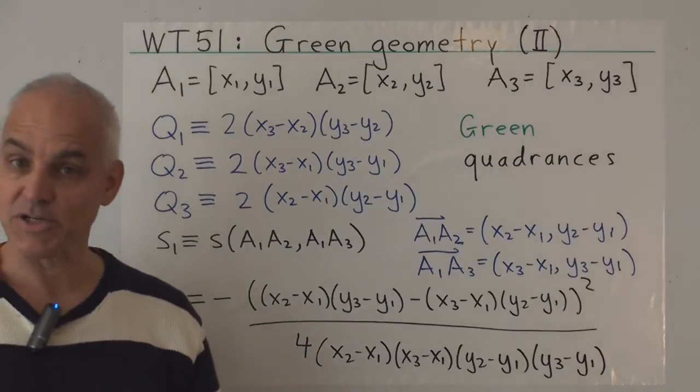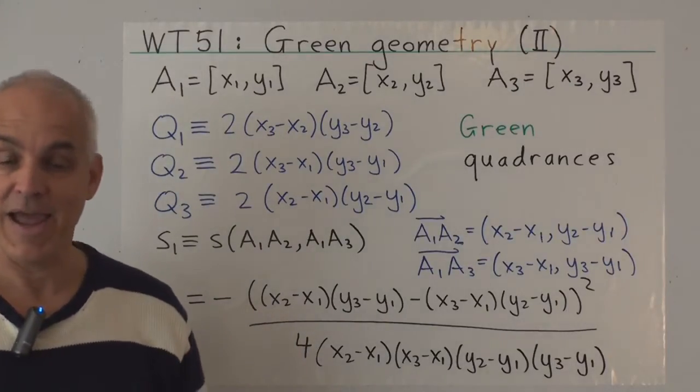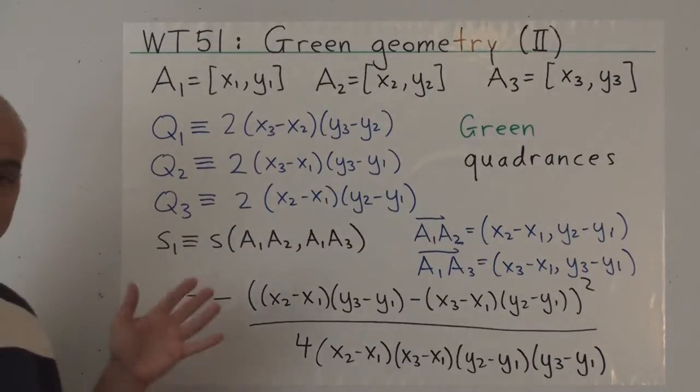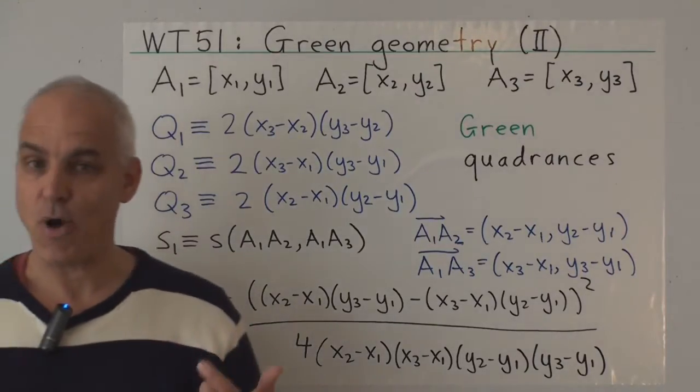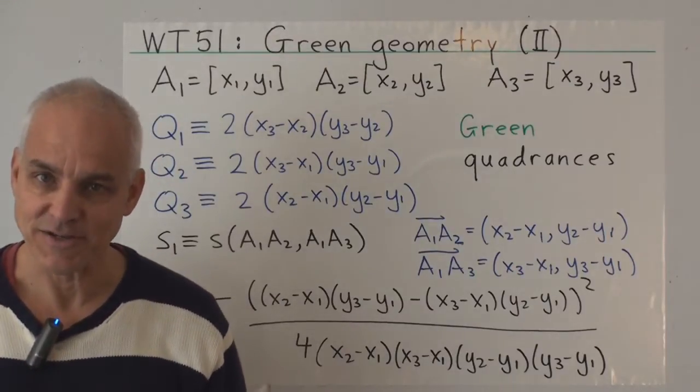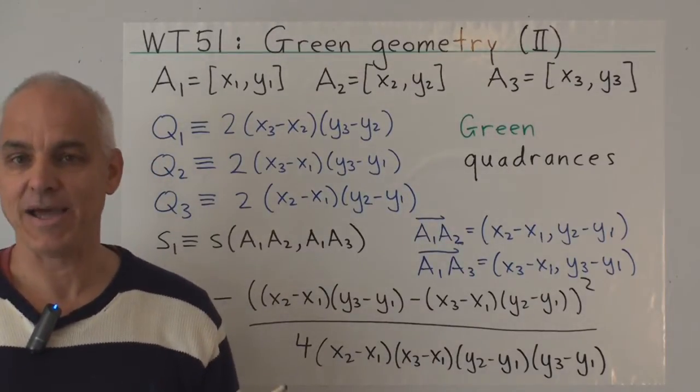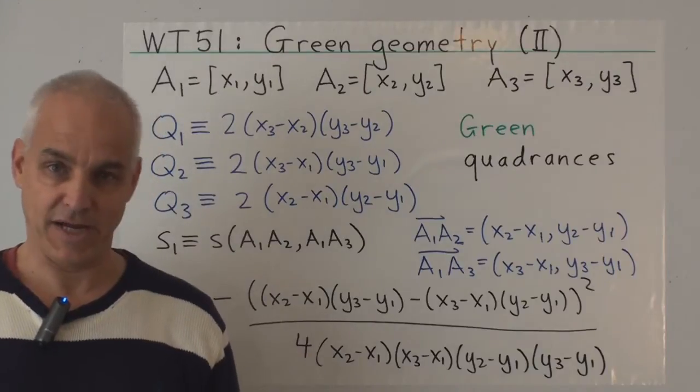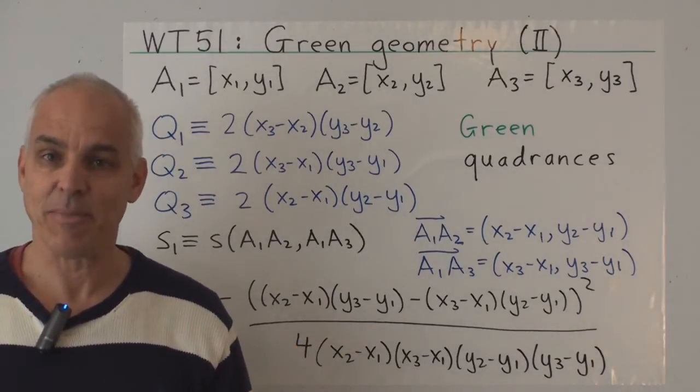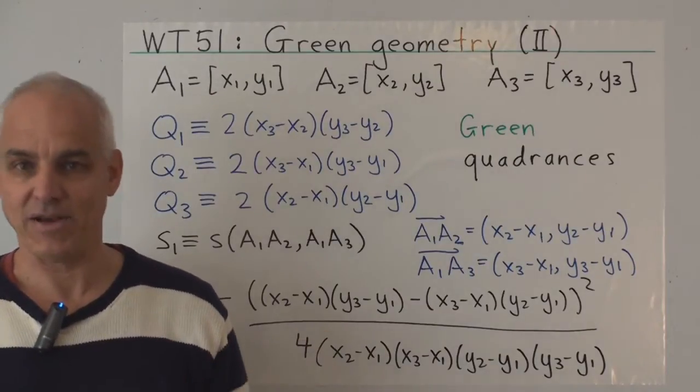So that's the expression for the spread at the vertex A1. And similarly, there's expressions for the spread at S2 and spread at S3. So what are the trigonometric laws that are going to hold for these three quadrances and the three spreads? Well, you're probably not too surprised to find out that they're exactly the same as the trigonometric laws that hold in familiar Euclidean geometry, which are the same as the trigonometric laws that hold in the red geometry.